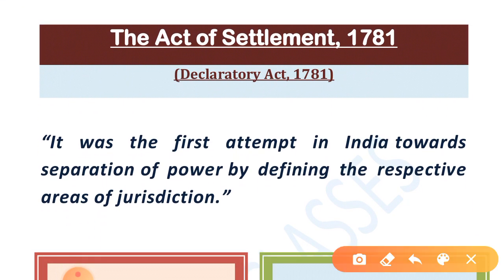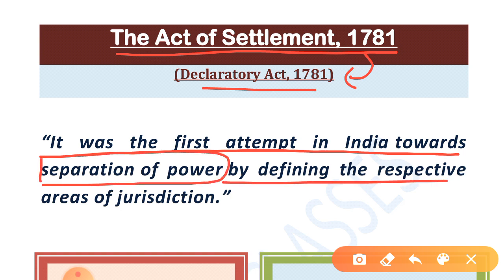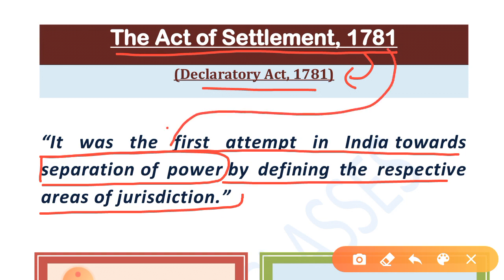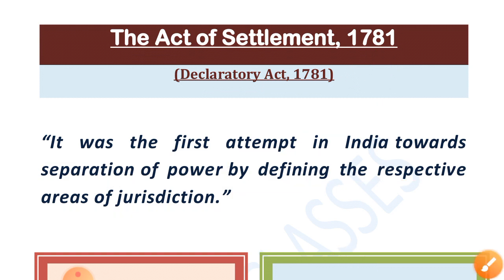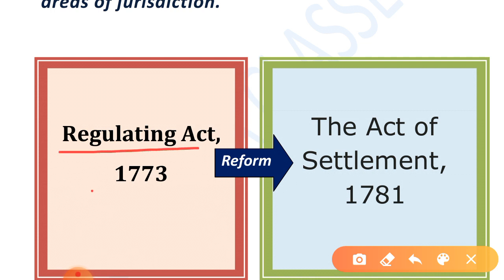The Act of Settlement 1781 was the first attempt in India towards separation of power by defining the respective areas of jurisdiction. This Act came about because jurisdiction was overlapping — it needed to be separated so that it would be clear, since jurisdiction had not been defined in the Regulating Act.